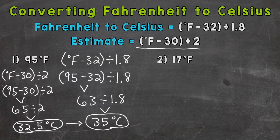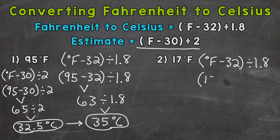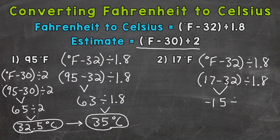Let's move on to number 2, where we have 17 degrees Fahrenheit. We start by rewriting our formula: degrees Fahrenheit minus 32, divided by 1 and 8 tenths. Plugging in: 17 minus 32 divided by 1 and 8 tenths. 17 minus 32 gives us negative 15, and we wrap up by dividing by 1 and 8 tenths. Negative 15 divided by 1 and 8 tenths gives us negative 8 and 3 repeating — a repeating decimal.